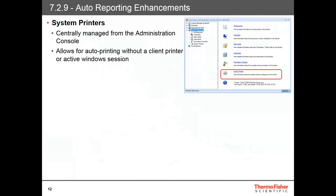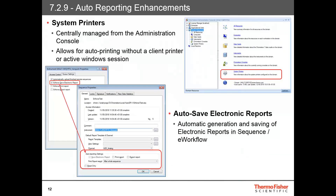Chromeleon 7.2.9 continues to enhance the post-acquisition reporting and printing features. A new print service can be enabled on the server to handle reporting tasks centrally. This means the Windows session on the Chromeleon client no longer needs to stay running after a user has started a sequence with post-acquisition printing — the user can start a sequence, close Chromeleon on the client, and log off, and the post-acquisition printing will still occur. System printers are being introduced, centrally managed in the administration console. A system printer can be accessed by any Chromeleon client on the network, and if the printer needs to be replaced, the system printer can be associated with the new printer and no changes to report templates need to be made. A new option, Save Electronic Reports, has been added to the Sequence Properties dialog box, which will automatically save a copy of the electronic report to the sequence once it's been completed. This can be enforced for all sequences on an instrument by a Chromeleon administrator.